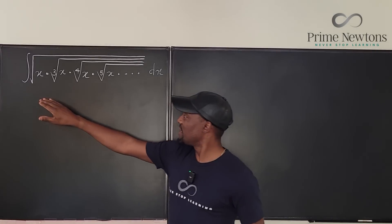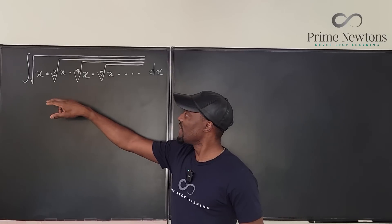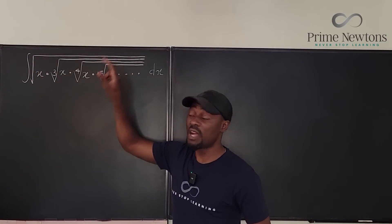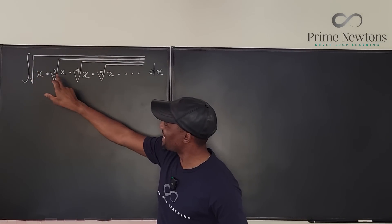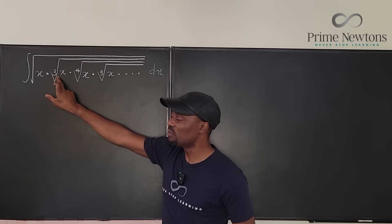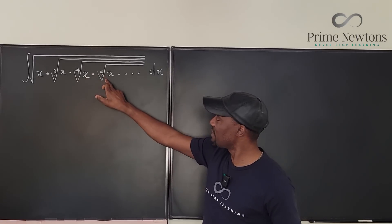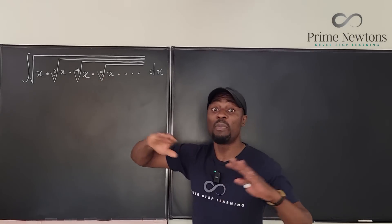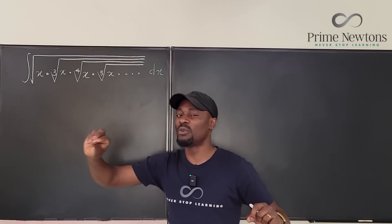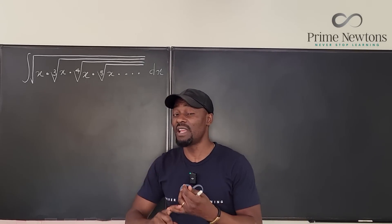If you look very carefully at this, it is more like a multiplication. What you're multiplying is X — but there's a giant square root sign over the product. It's not just X; it is the cube root of X, then the fourth root of X, then the fifth root of X, and it goes on perpetually.